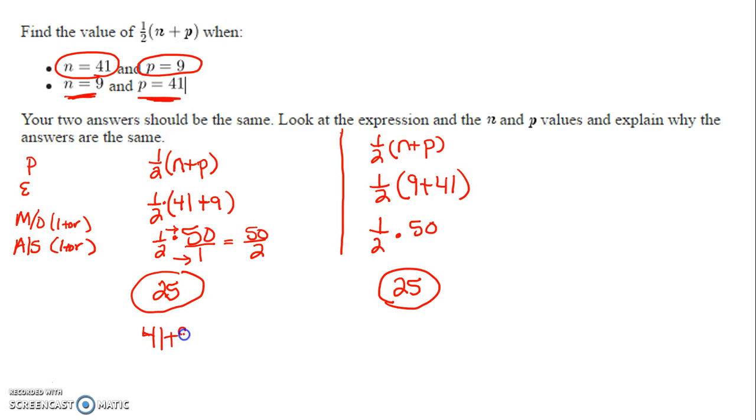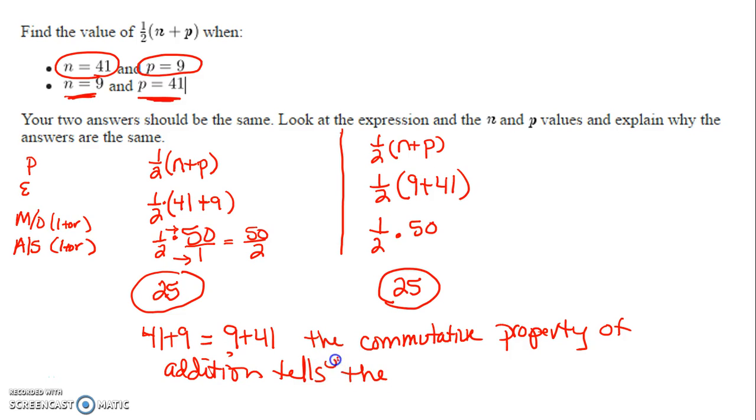41 plus 9 is exactly the same as 9 plus 41. The commutative property of addition tells us the order that we add two numbers won't change the value.